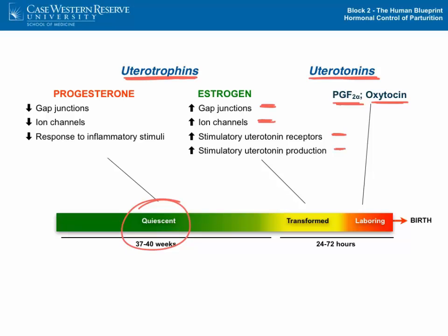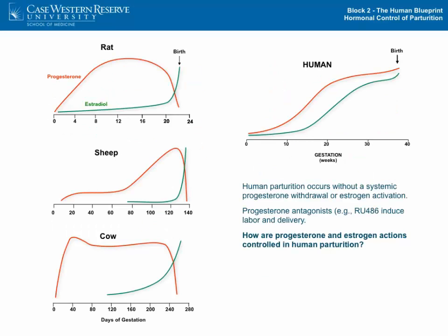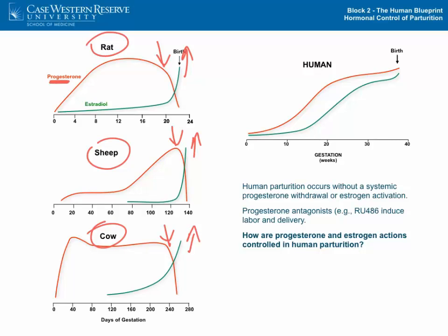Changes in these hormones transition the uterus from the quiescent to the laboring state. The main changes are that the effects of progesterone are removed and the effects of estrogen are acquired — progesterone withdrawal and estrogen activation. In most animals, this is reflected in the circulating levels of progesterone (in red) and estradiol (in green), where in the rat, sheep, and cow, progesterone levels go down just before the onset of labor and estrogen levels go up, changing uterine function.